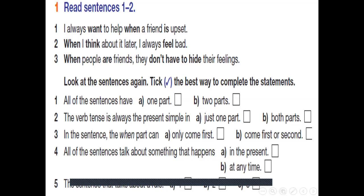Okay. Look at the sentences again. Tick through the best way to complete the statement. All of the sentences have one part or two parts? Of course, two parts. The verb tense is always present simple. In just one part or both parts? Of course, both parts. In both parts it is present simple. We can't use past, and we can't use 'will' in the second part. When we say if it rains tomorrow, I might stay at home. Here no. Something that happens all the time, at any time. Repeated habits or facts. We use present simple for them.